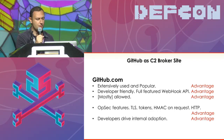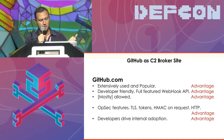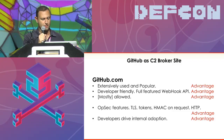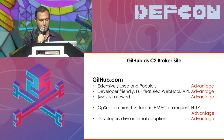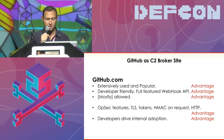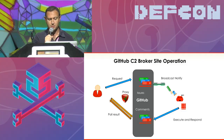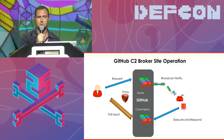GitHub — github.com — is used and popular, so that checks out. It's developer-friendly, it has an awesome webhook API, and it has OPSEC features — it's TLS, tokens, HMAC, all over HTTP. Last but not least, developers themselves drive the adoption inside their companies for GitHub. All of these are advantages for us. We're going to use GitHub to open up issues and comments and use GitHub to achieve this transparency.